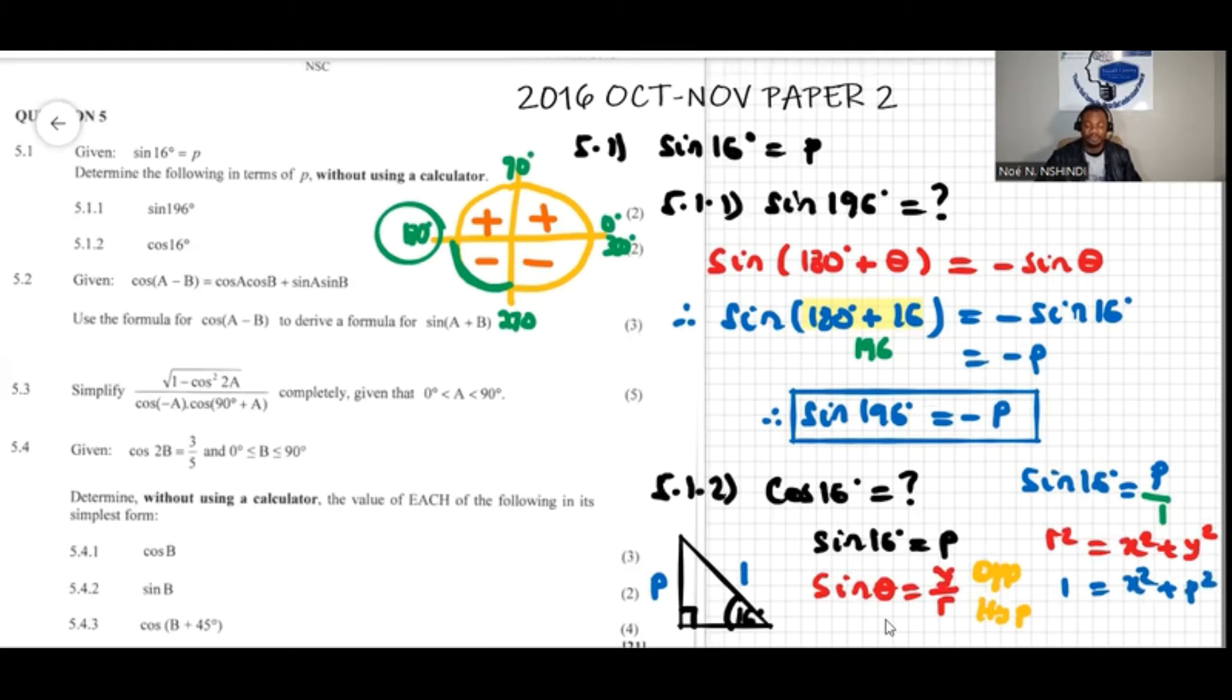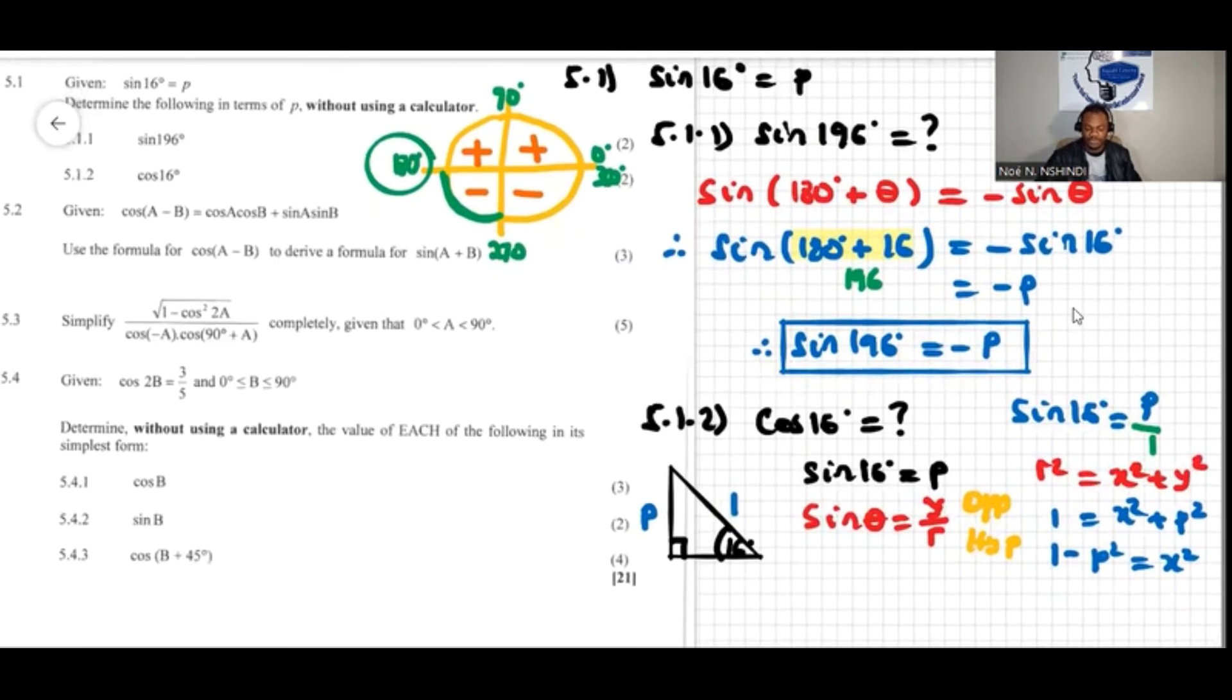So we can find x. If I move p over, it can be one minus p squared equal to x squared. And then this will be that x will be square root of one minus p squared.